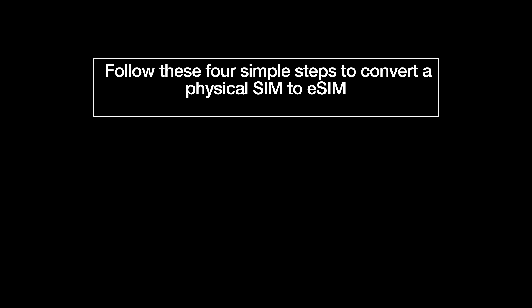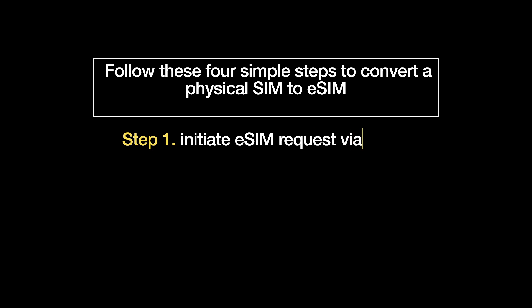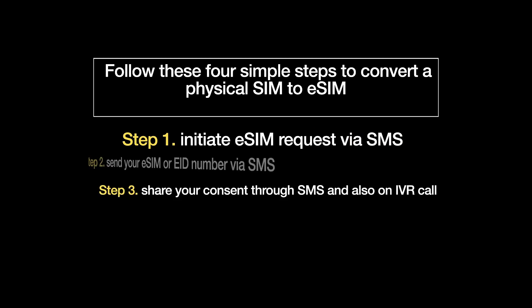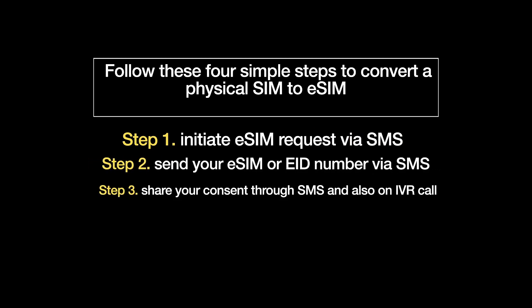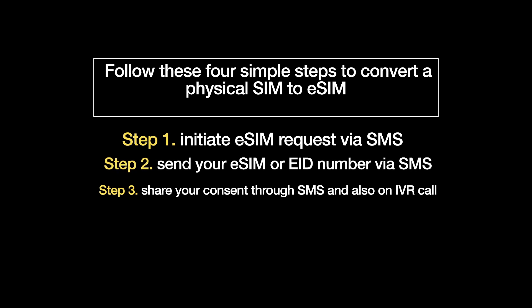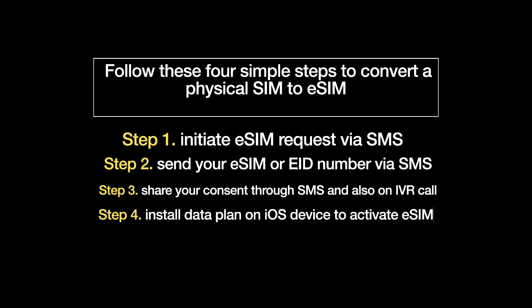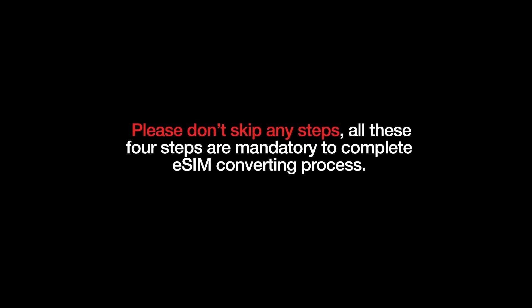Follow these four simple steps to convert a physical SIM to eSIM. Step one: initiate eSIM request via SMS. Step two: send your eSIM EID number via SMS. Step three: share your consent through SMS and also on an IVR call. Step four: install the data plan on your iOS device to activate eSIM. Please don't skip any steps — all four steps are mandatory to complete the eSIM conversion process.